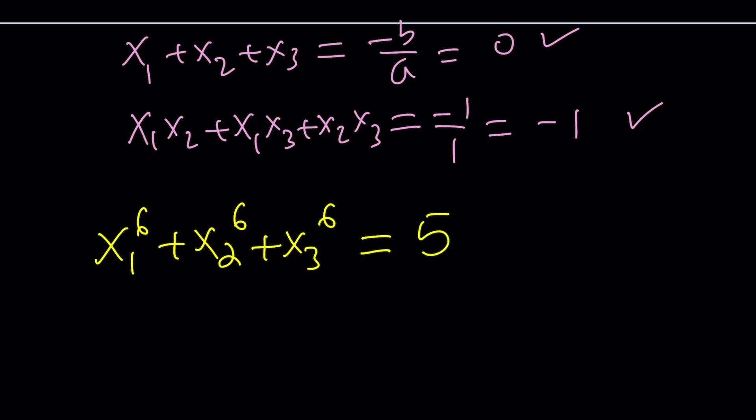So if you went with the first method, found all the roots, which would be very, very hard, even impossible maybe, and added their six powers, imagine raising those radicals to six powers, and add them together, you would get 5, hopefully. And this brings us to the end of this video.